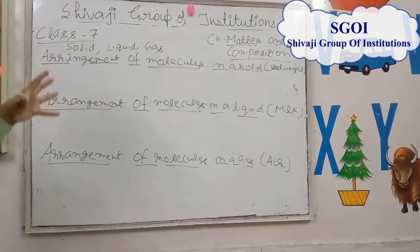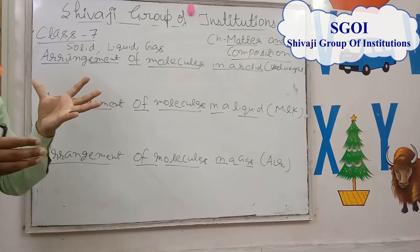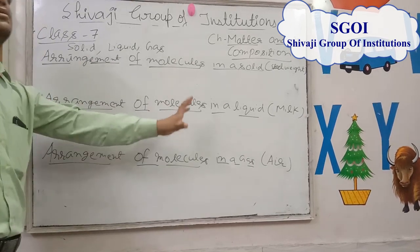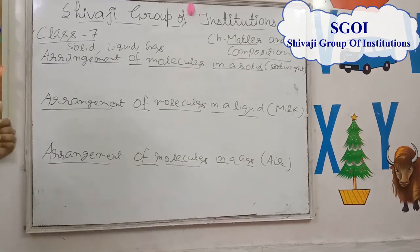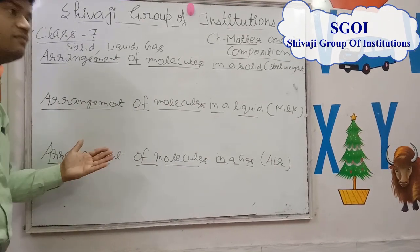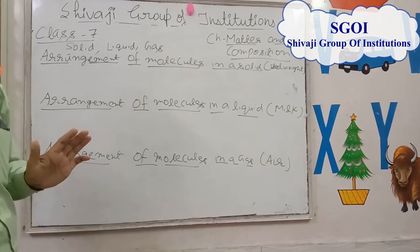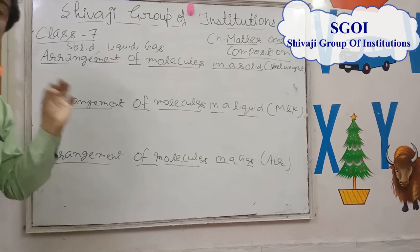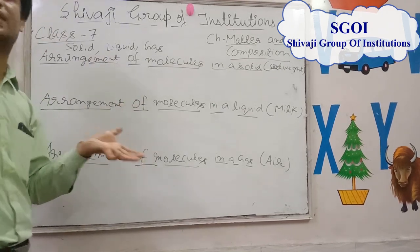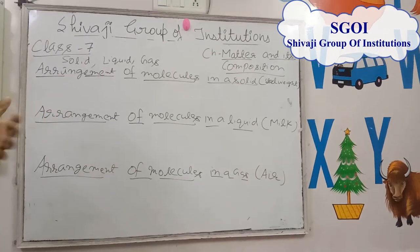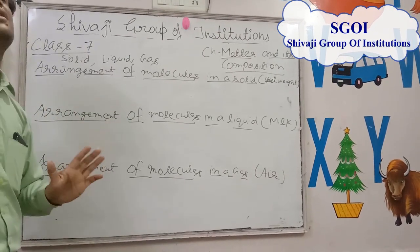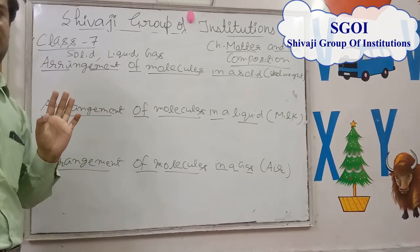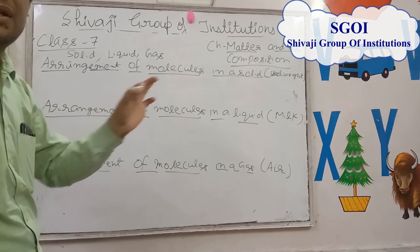Thus, molecules of liquids move here and there in the container in which they are kept. Because of these points, we can say that liquids have a definite volume but not a definite shape. The definite volume is due to the number of molecules remaining the same, while they take the shape of the container — that is why they do not have a definite shape.